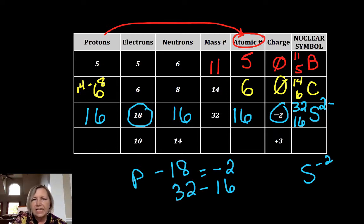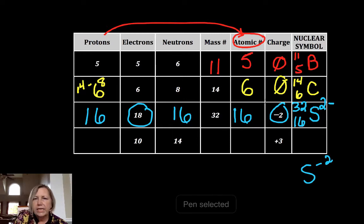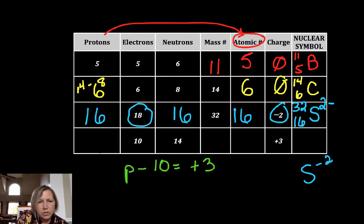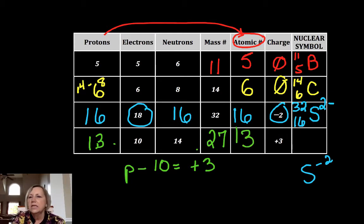Let's take a look at this final one. I've got 10 and 14 and a plus 3. I have to do a similar thing. If we know electrons and charge, we can get to our protons. Protons minus 10 equals our charge of plus 3, so our protons must be 13. My mass number is protons plus neutrons: 27.